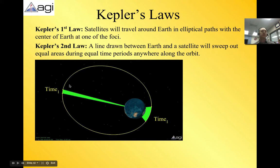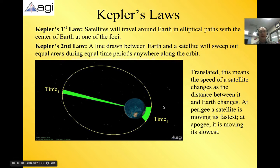And that's just going to show that it's moving slower here, but it's really far away. And it's moving fast here, but it's really close. So that's sort of what that is connecting. So translated, this means the speed of a satellite changes as the distance between it and the Earth changes. At perigee is moving fastest and at apogee is moving slowest.